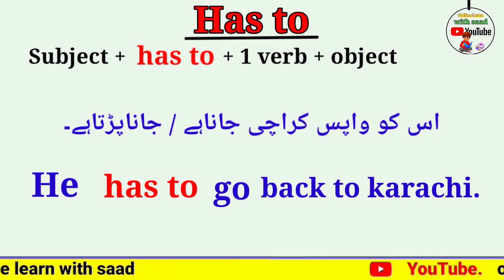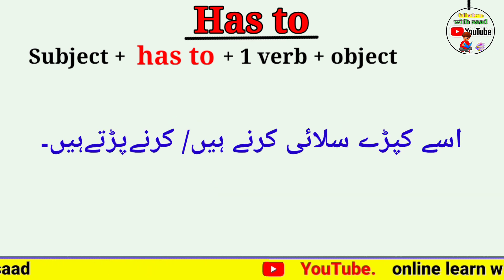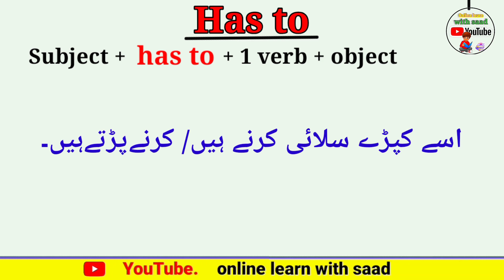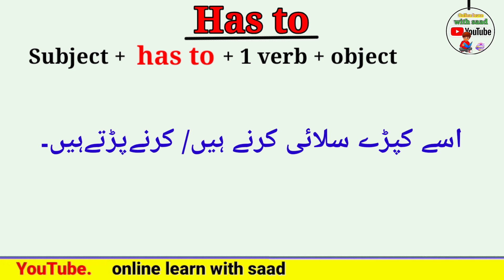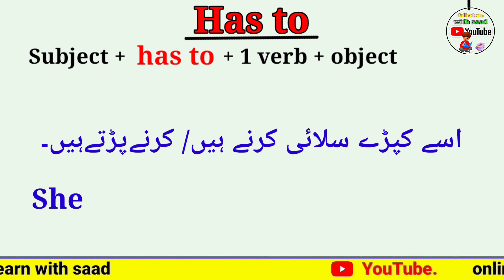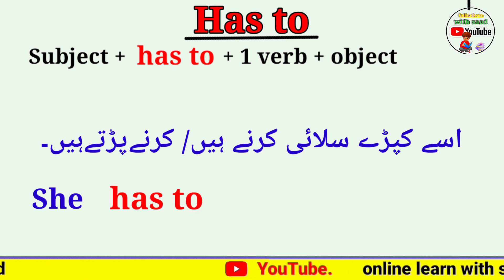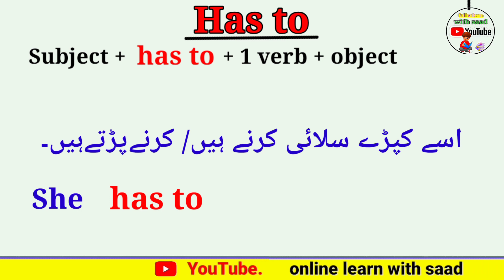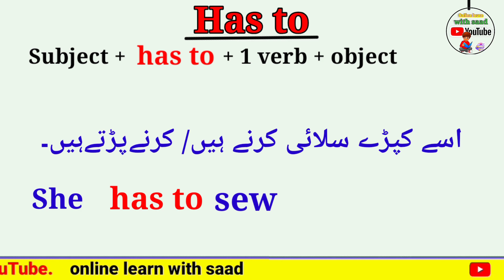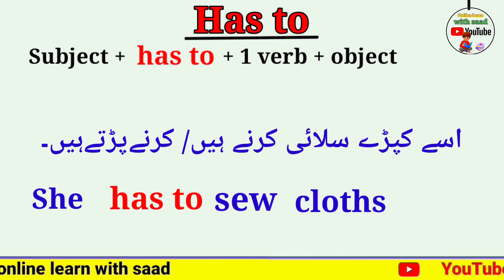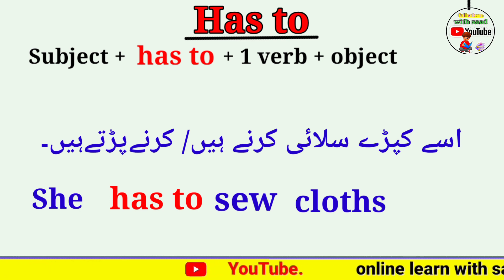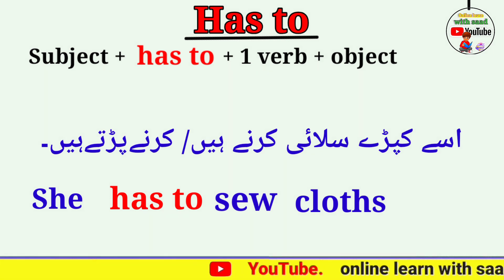دوسرا جملہ: 'اسے کپڑے سلائی کرنے ہیں / اسے کپڑے سلائی کرنے پڑتے ہیں'۔ Subject 'اسے' — انگلش میں 'she'۔ پھر 'has to'، پھر first form of verb 'sew'، پھر object 'clothes' — کپڑے۔ She has to sew clothes.